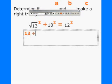Then that gives us plus 10 squared, which is 100, and that's supposed to equal 12 squared, which is 144.